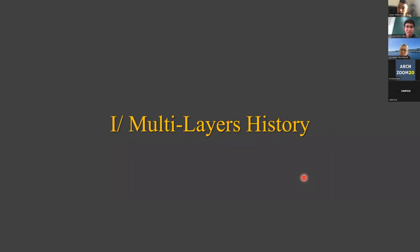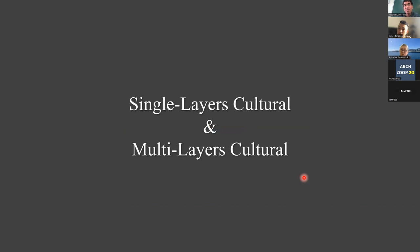Why is it not similar to Hanoi? In Hanoi and Thang Long they have more than a thousand years of history, but in Ho Chi Minh City we usually say that we have only 300 years of history. So what happened before that? First we have to know what is single-layer control and what is multi-layer control.